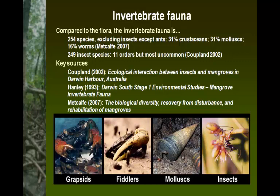Ants are also important in herbivory of mangroves, eating mangrove leaves in particular and pollinating many of the flowers. The study by Coupland looked at insect herbivory and pollination and how they interacted with the mangrove pollination cycle.